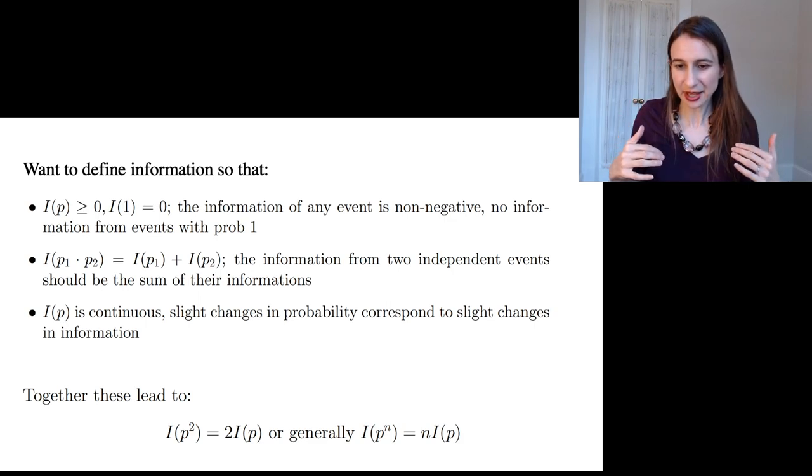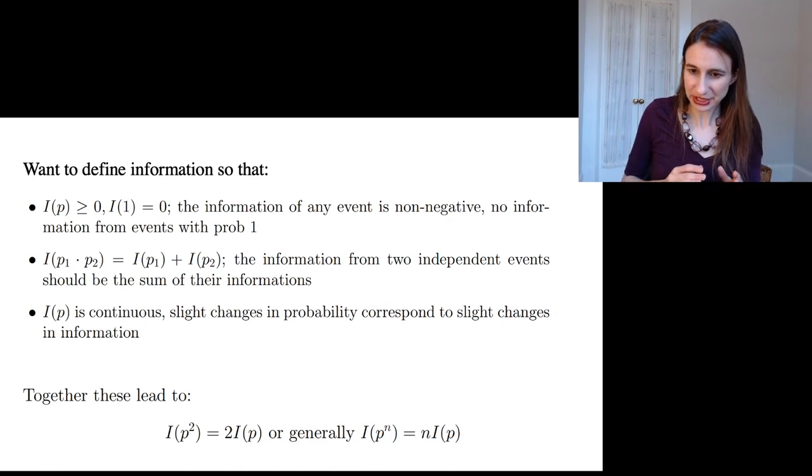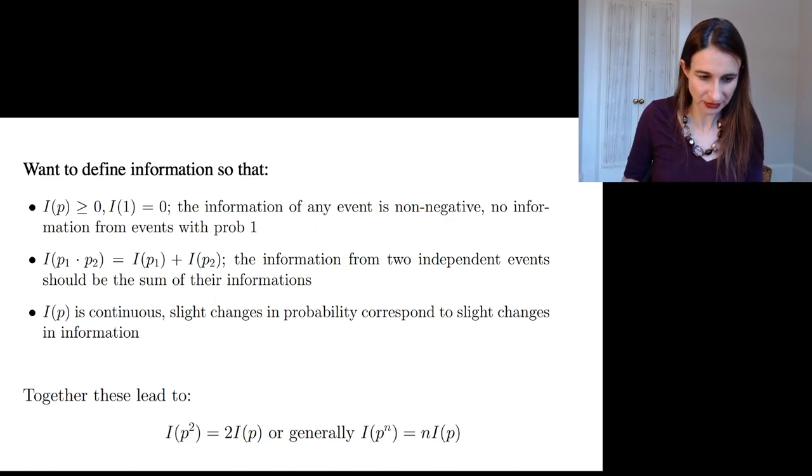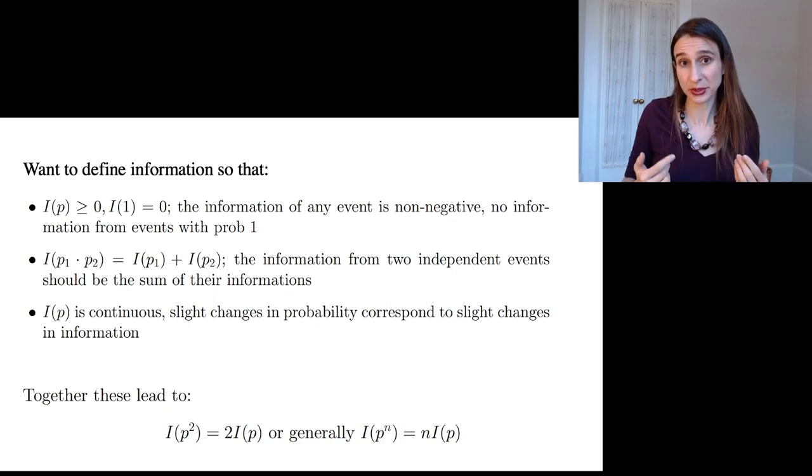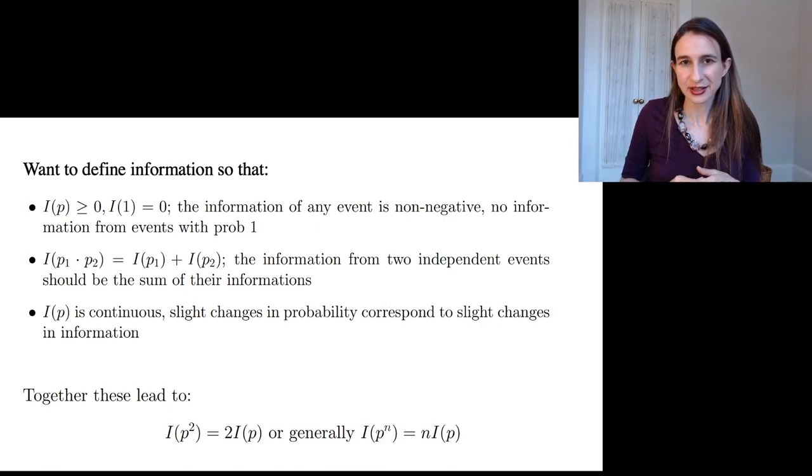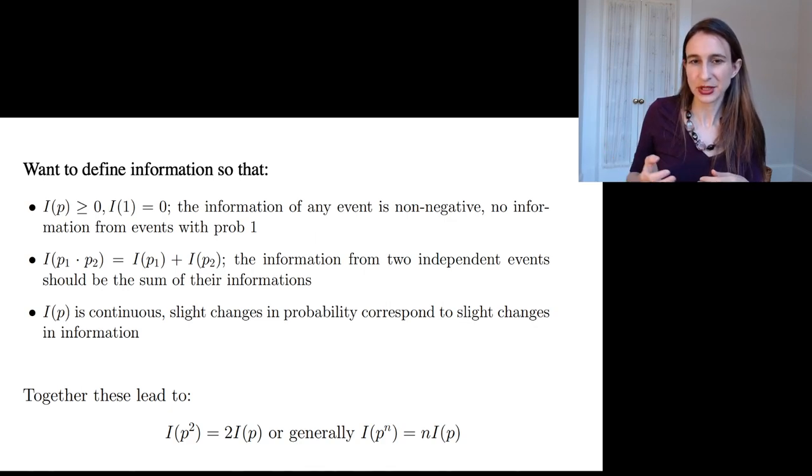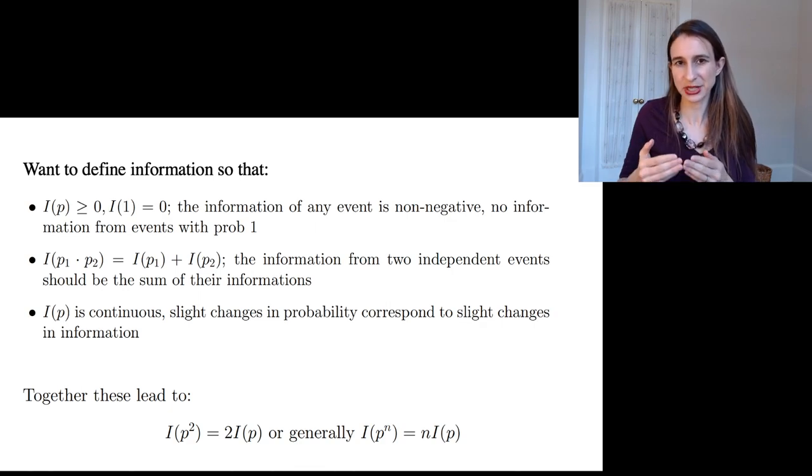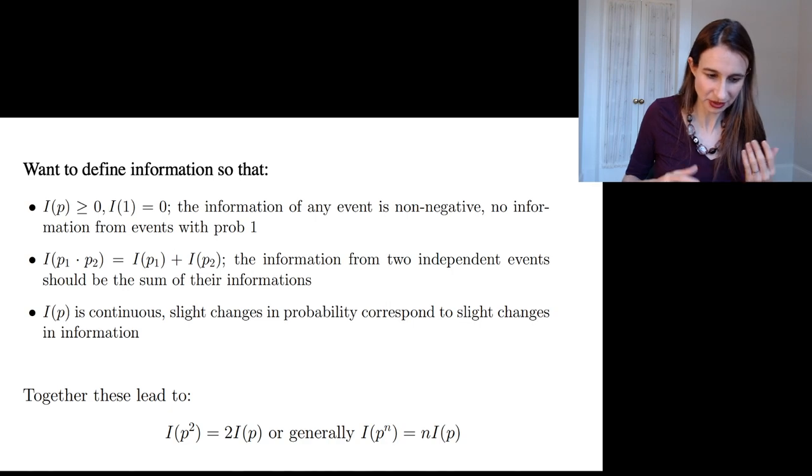The other thing we want to have is that if you have two independent events, then seeing them happen together should be the sum of seeing them separately. The information from two independent events should be the sum of their information. And then also we want the information to be continuous. Slight changes in probability should correspond only to slight changes in information. It would be really strange if this thing had jumps in it.